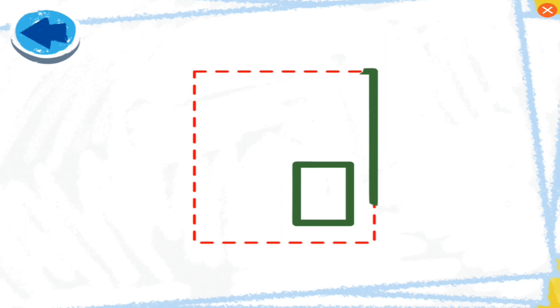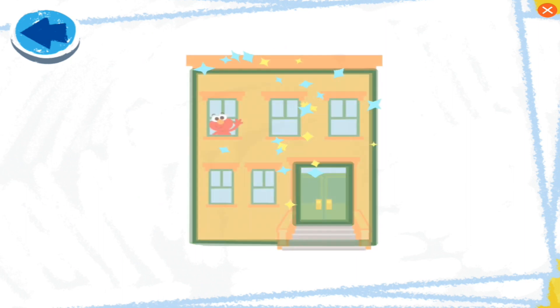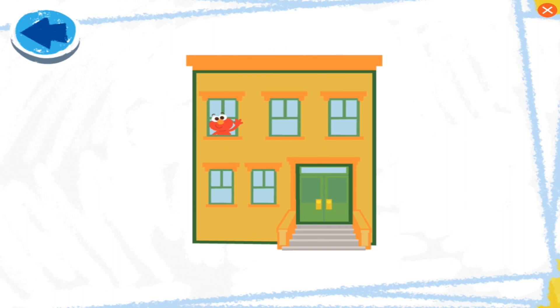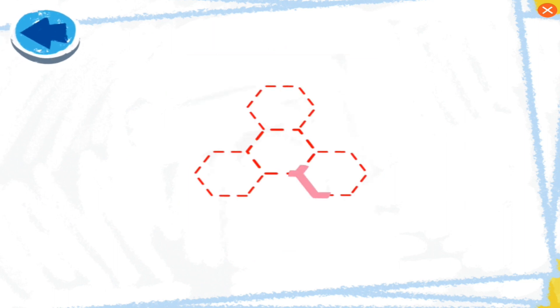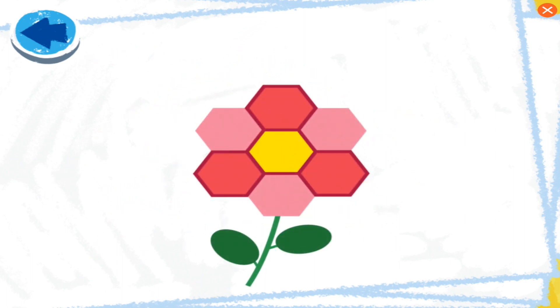This picture has rectangles! Boy, Elmo wonders what it is! Hey! It's Elmo's building! This picture has hexagons! Boy, Elmo wonders what it is! Whoa, nice track! Elmo sees it's a flower!